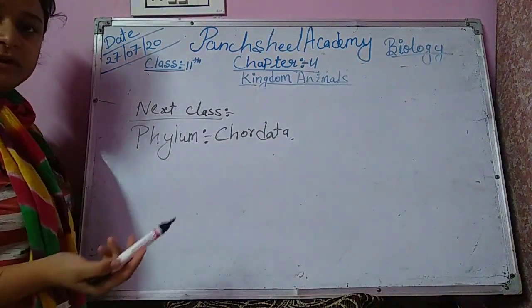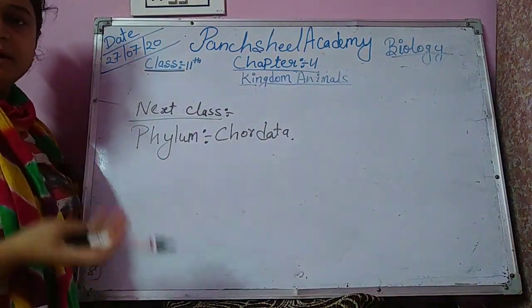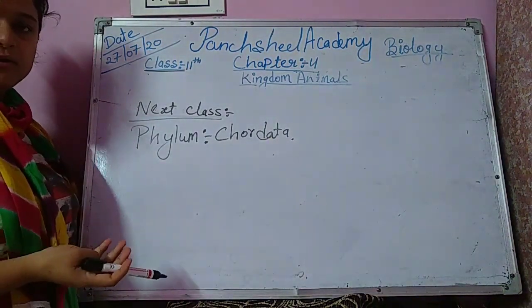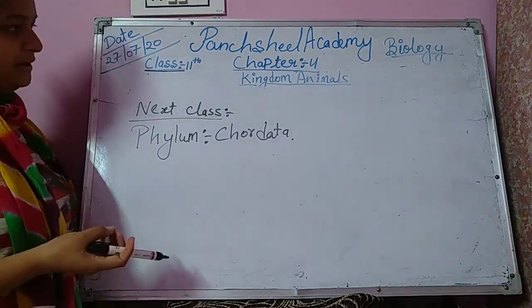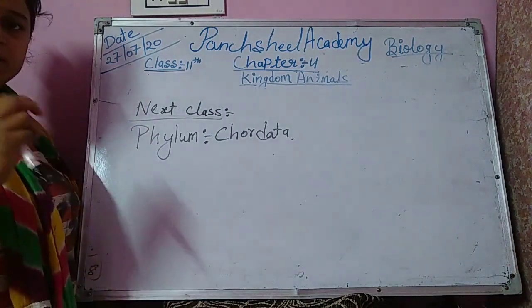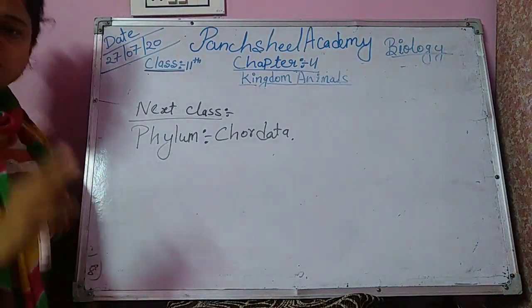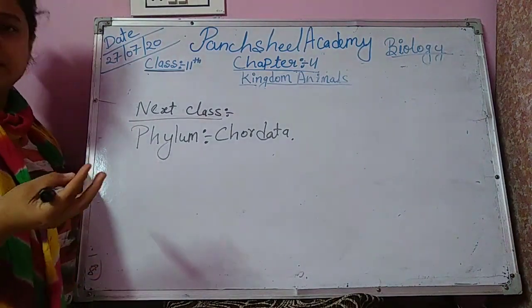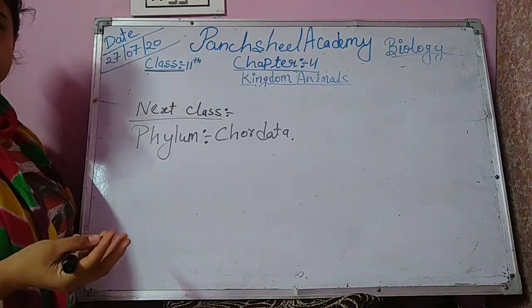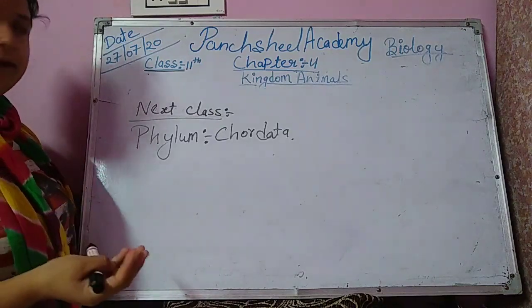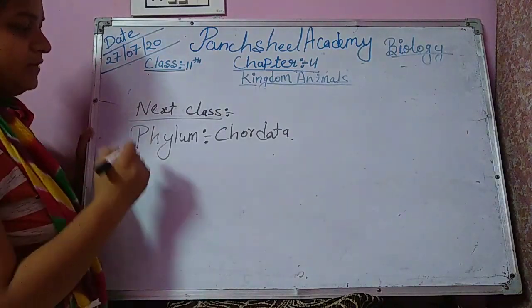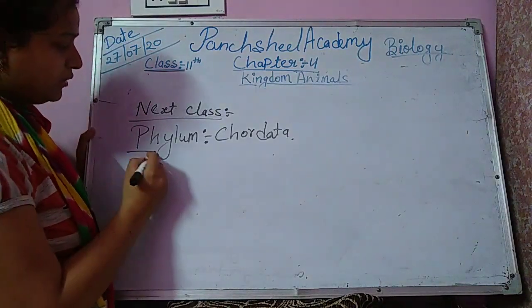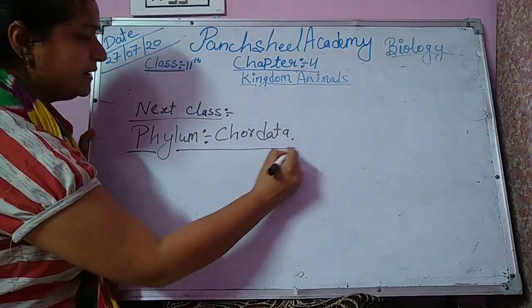Today, what did we learn? We learned about Echinodermata and Hemichordata. We discussed two phyla: Echinodermata and Hemichordata. In the next class, we are discussing phylum Chordata in detail.